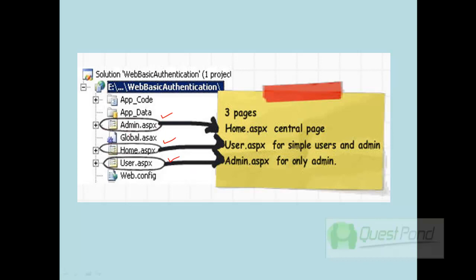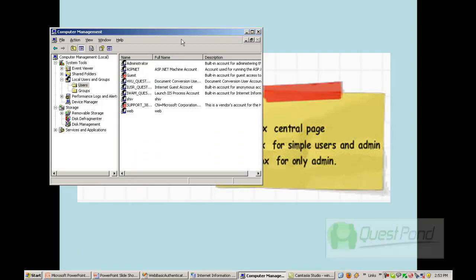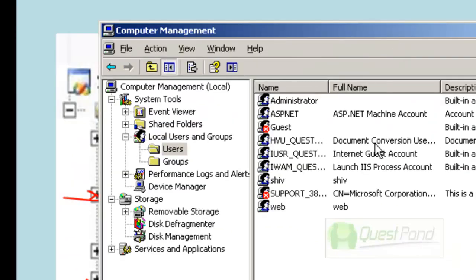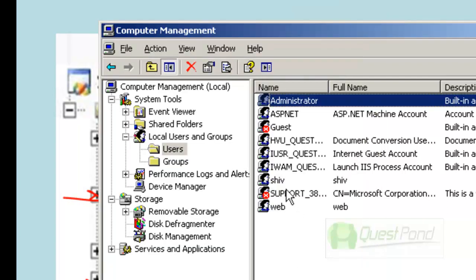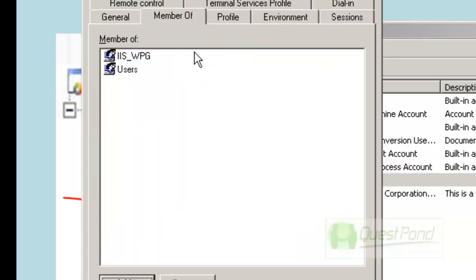The admin.aspx page can only be accessed by administrators. We will create two users in Computer Management: one is 'shiv' and the other is 'administrator'. The administrator has access to both admin.aspx and user.aspx, but shiv only has access to user.aspx — so if shiv tries to browse admin.aspx he won't be able to. You can see in my Computer Management local user groups that administrator is a member of the administrator group, while shiv is a member of just the users group.